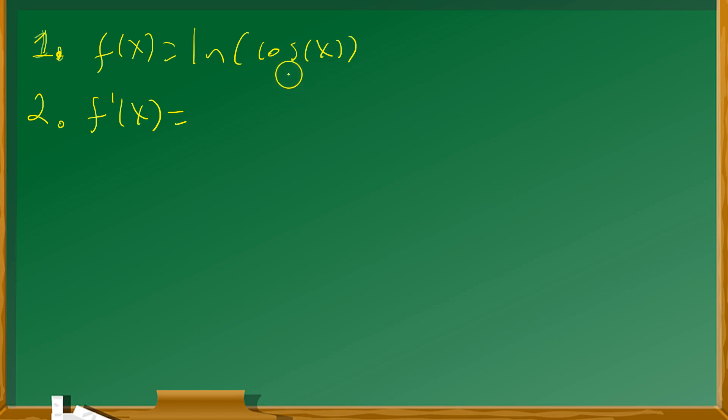The chain rule states the following in this context. You differentiate the outside. Now, the outside function is the ln function. Remember over here on the side that the ln of, for example, u, when you differentiate this quantity, that's going to give you 1 over u times the derivative of the inside.